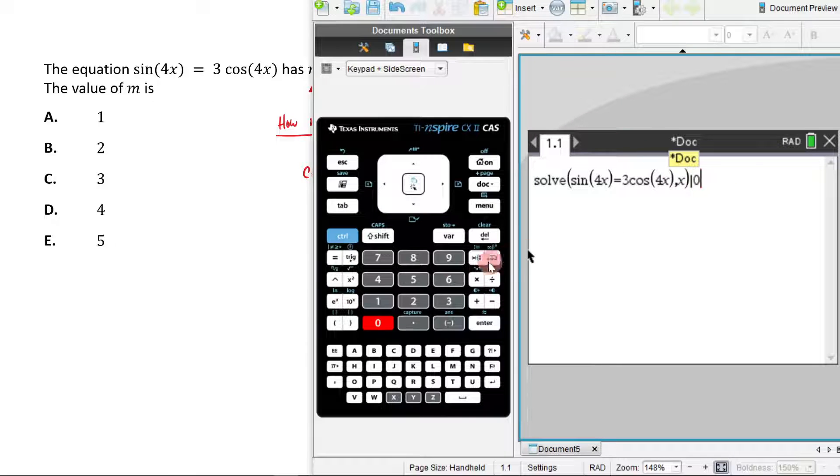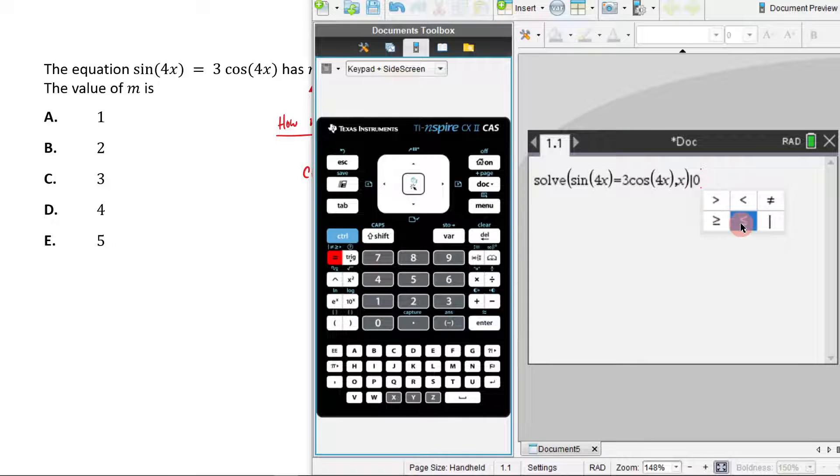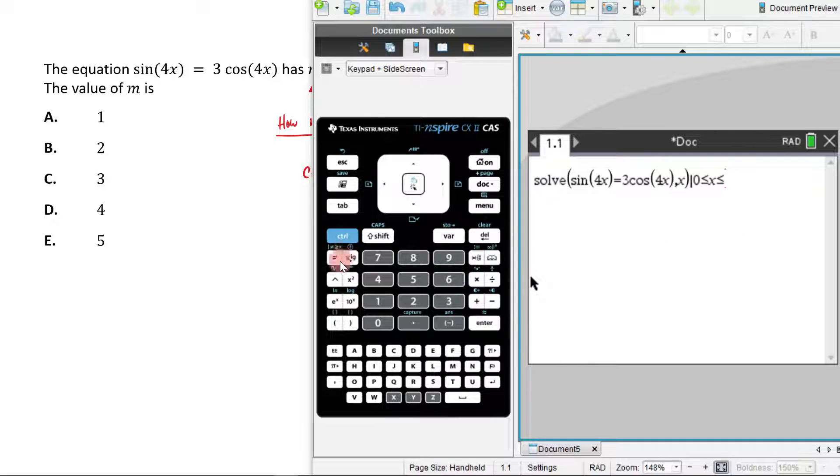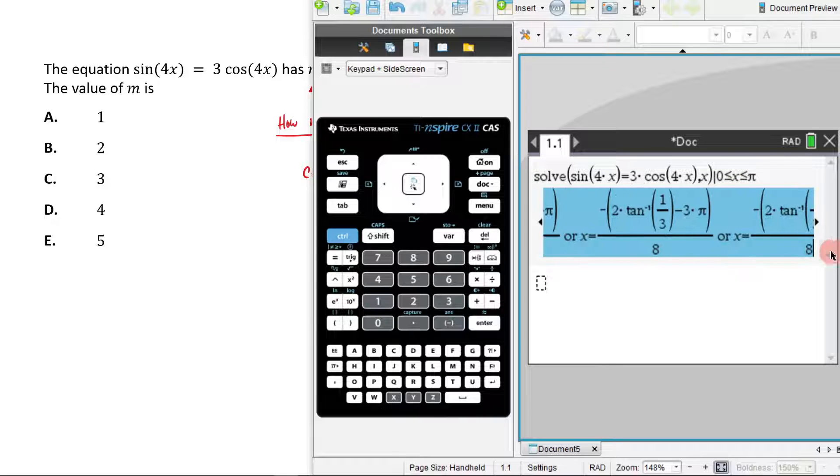So it's 0 to π. I'm going to go 0 is less than x is less than π. Then I'm going to hit enter and I'm going to get this monstrosity.